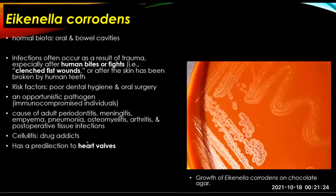Eikenella corrodens is normal biota of the bowel and oral cavities. Infections usually occur as a result of trauma, especially after bites or clenched fist wounds — after the skin has been broken by human teeth. Risk factors include poor oral and dental hygiene; it is an opportunistic pathogen in immunocompromised individuals. It causes adult periodontitis, meningitis, empyema, pneumonia, osteomyelitis, arthritis, and post-operative tissue infections. In drug addicts, it manifests as cellulitis and has a predilection for heart valves.